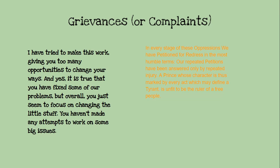But the bottom of the grievances section was where the colonists tried to say: we've tried and you weren't listening. In the breakup letter, A.C. said, 'I've tried to make this work, giving you too many opportunities to change your ways. You've fixed some of the problems, but just the small stuff.' And the words from the Declaration say: 'In every stage of these oppressions, we have petitioned for redress in the most humble terms.' Petitioning for redress means asking him to rethink it. 'Our repeated petitions have been answered only by repeated injury' — meaning we ask for something and you answer us with more taxes. 'A prince whose character is thus marked by every act which may define a tyrant is unfit to be the ruler of free people.' Notice — that's one sentence.